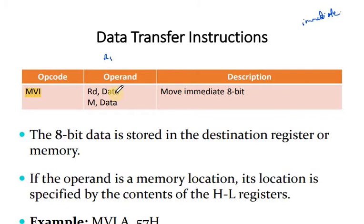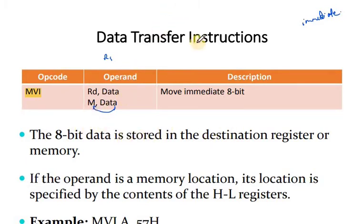With MVI, move immediate data to the destination. The 8-bit data is stored directly in the destination register or memory location address. If the operand is a memory location, its location is again specified by the contents of the HL registers — the same rule applies here as well.